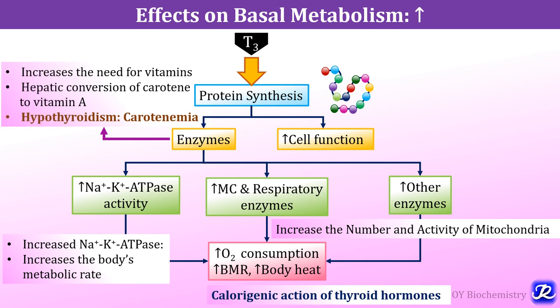As there is increase in enzyme synthesis, there is increased need for vitamins because vitamins are co-enzymes. Thyroid hormones are also required for hepatic conversion of carotene to vitamin A. In hypothyroidism, carotene cannot be converted to vitamin A, leading to deposition of carotene and carotenemia. This carotenemia gives a yellowish tint to the skin but differs from jaundice because the sclera is not affected.